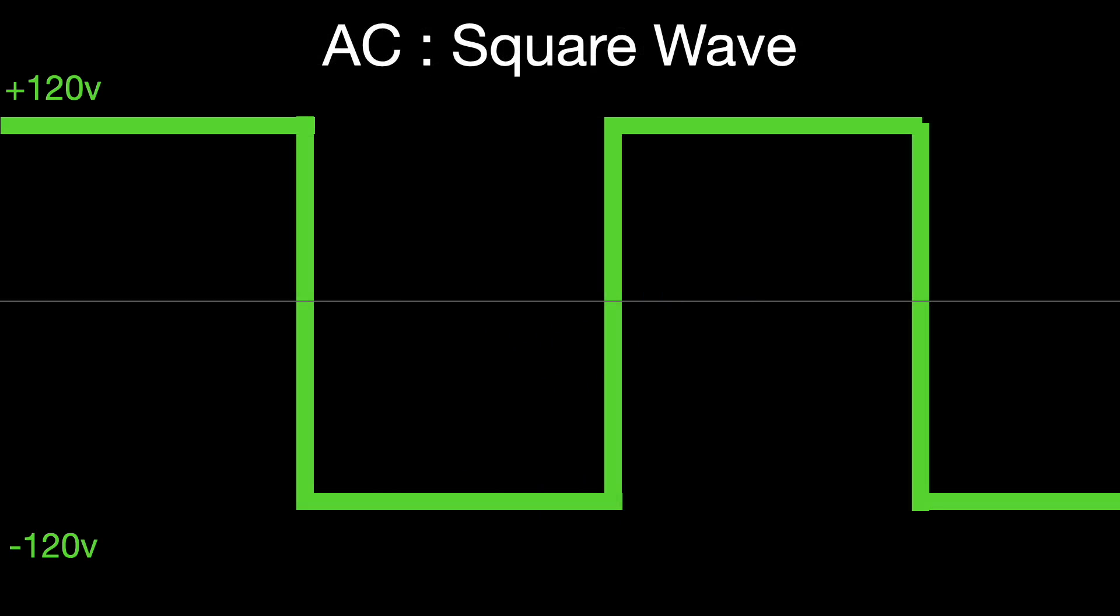It looks like this 60 times per second. Now for obvious reasons, this is called a square wave. Notice that the voltage now goes from positive 120 volts to negative 120 volts, which means it's now going in the other direction at 120 volts.